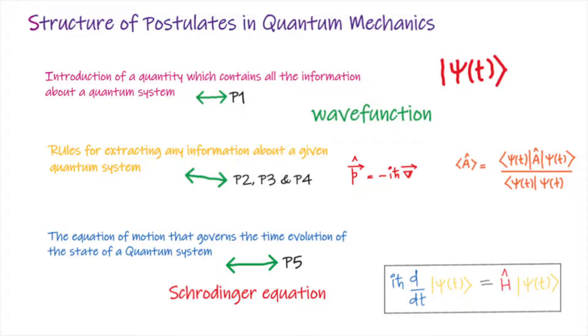And the final postulate gives you an equation, which explains how the state of a system evolves in time. That is, knowing the state of a system at a time t, we can find the state of a system at any later time t.